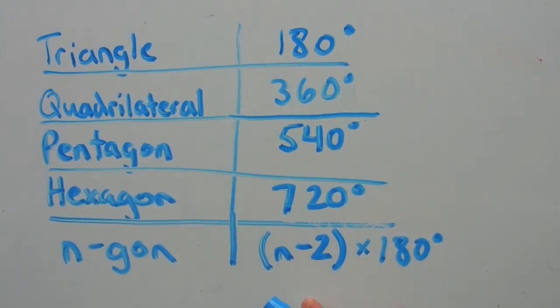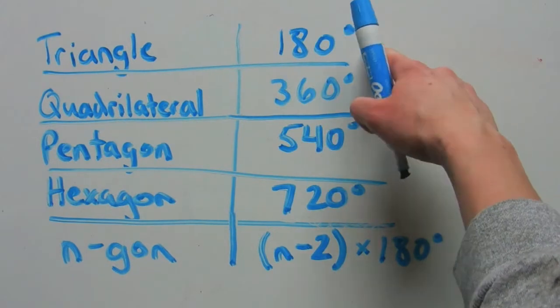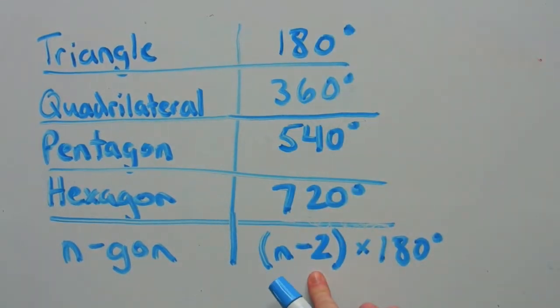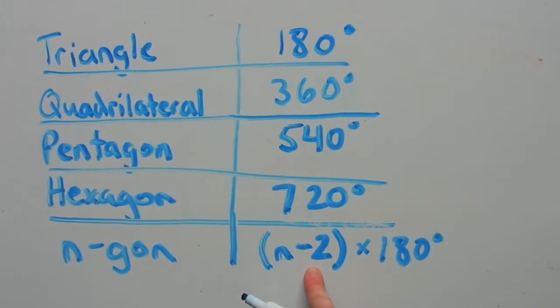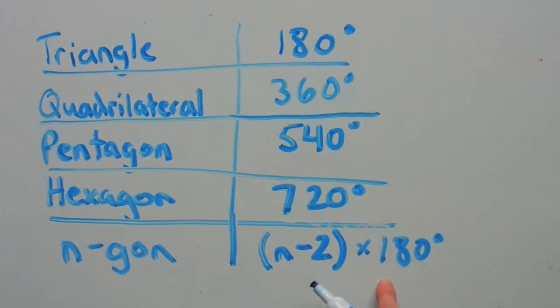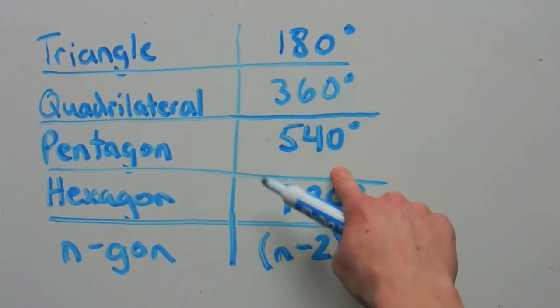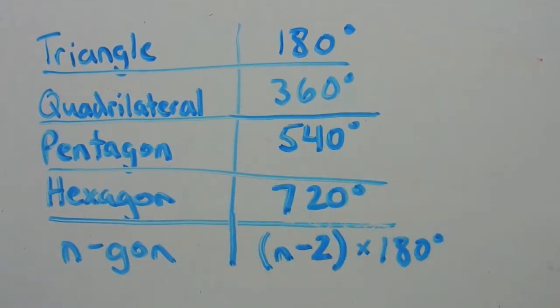So for instance, a triangle has three sides. Three minus two is one. One times 180 is 180 degrees. Skipping on to a pentagon, a pentagon has five sides. Five minus two equals three, and three times 180 equals 540. That's how to calculate what the interior angles should add up to be for any sided polygon.